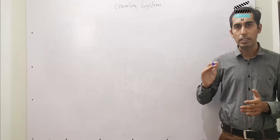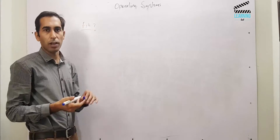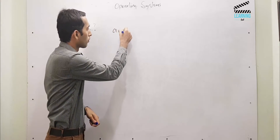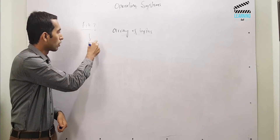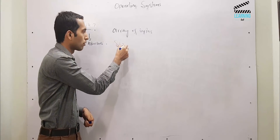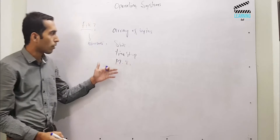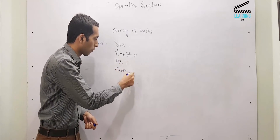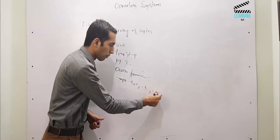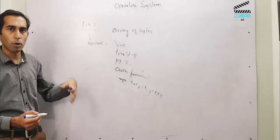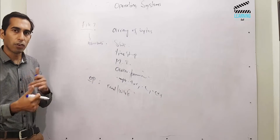Before moving towards the file system, let's quickly discuss files and directories. A file is an array of bytes which has some properties or attributes — that could be its size, timestamp, last modification time, its permissions, and extension type like mp4, txt, .c, .c++. Other than that, we can also perform operations on a file: read and write operations, create file, edit file, and delete file.